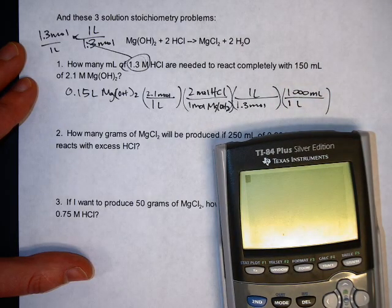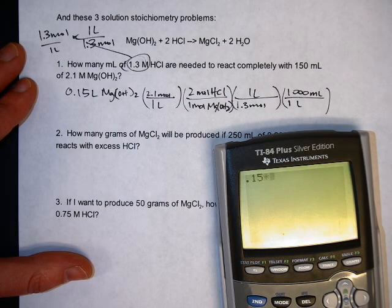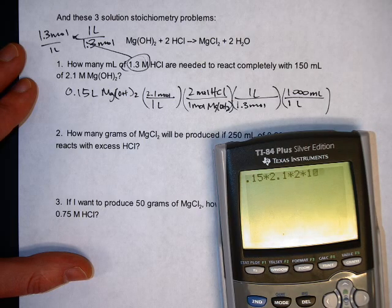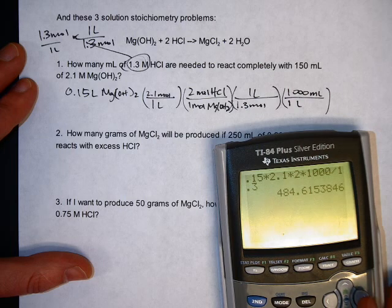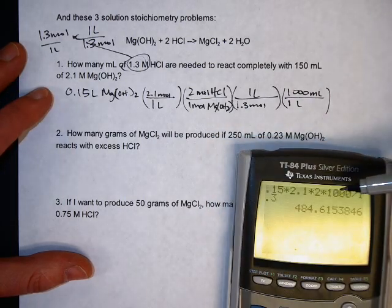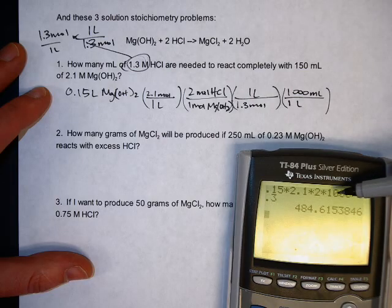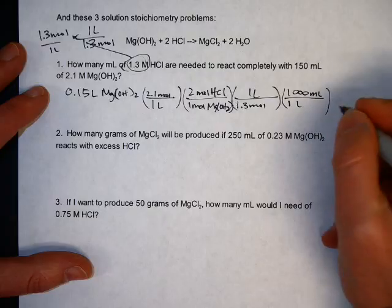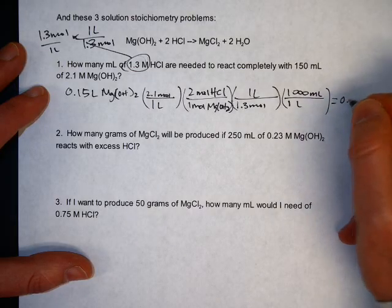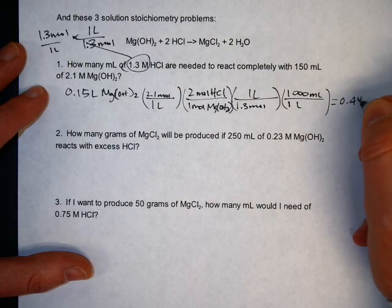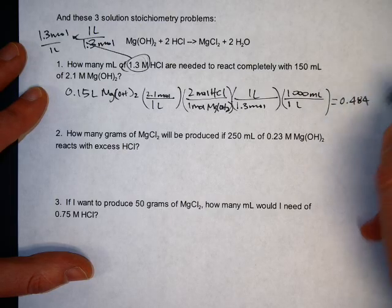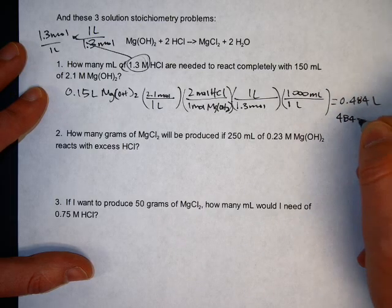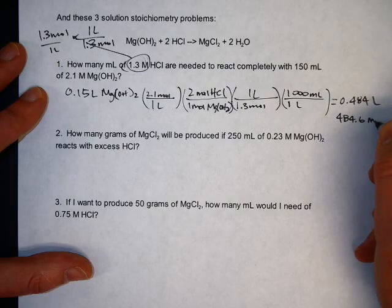If you do that all correctly, you will find that you get 484, is that right? I hope so. Let's see, 0.15, 2.1 to 1,000, 1.3. We'll see what's right. Get 484 milliliters. 0.484 liters or 484.6 milliliters.